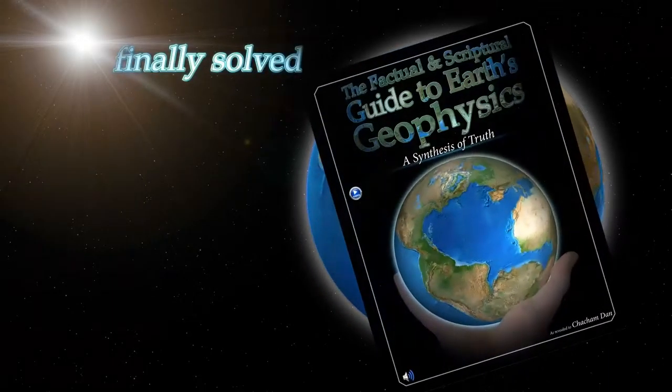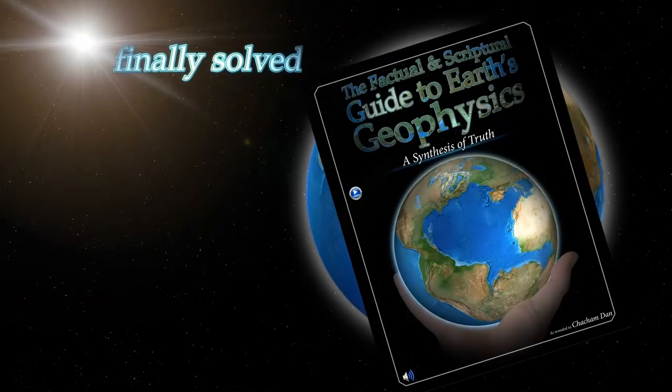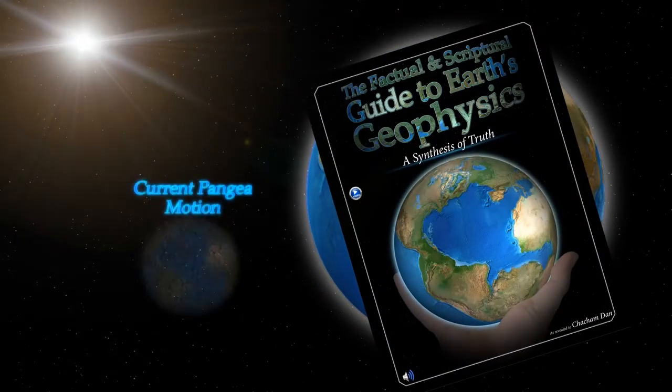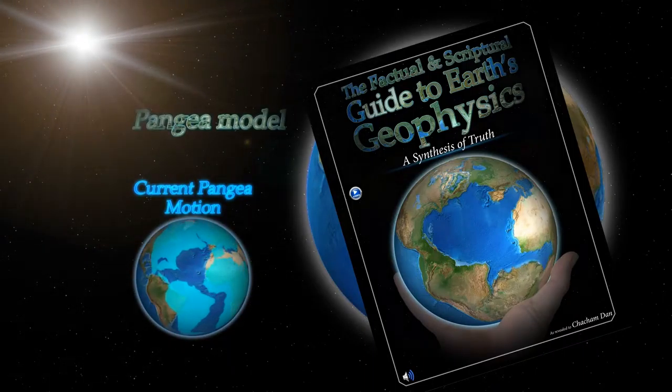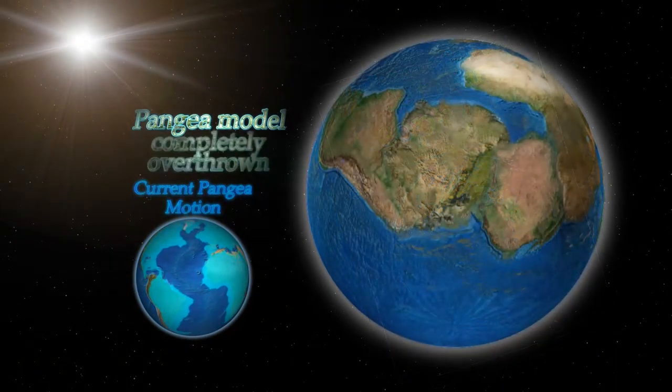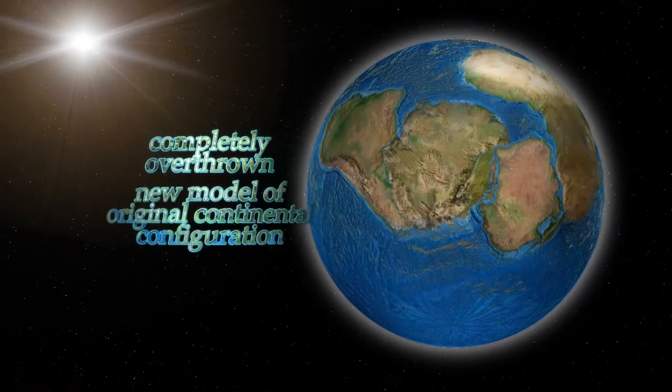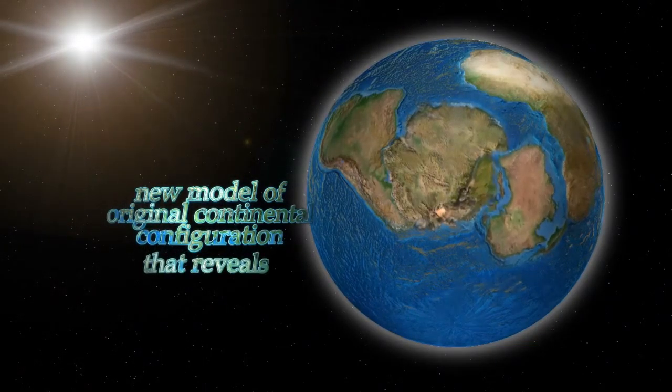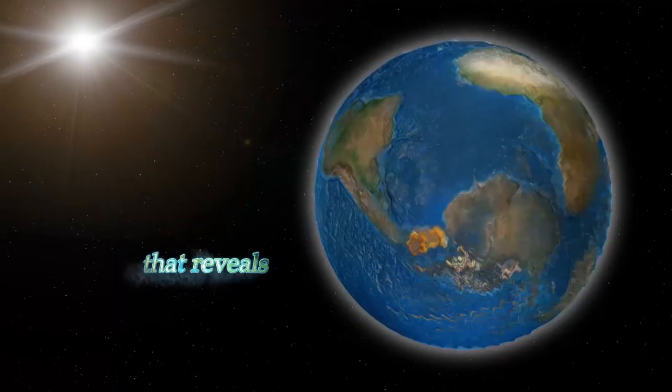That is finally solved in the Factual and Scriptual Guide to Earth's Geophysics, where the Pangaea model and critical elements of the theory of plate tectonics are completely overthrown by a new model of original continental configuration that reveals the reality of the Great Flood.